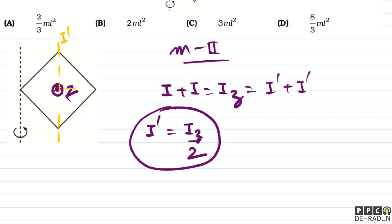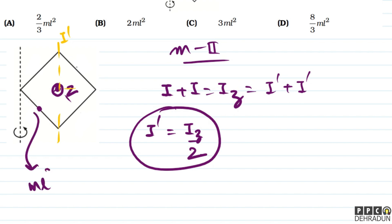अब कोई भी rod लें — let's say यह वाली rod। इसके center से pass करती एक axis imagine करते हैं जो screen के perpendicular होगी। इस axis के about moment of inertia होगा ML²/12।